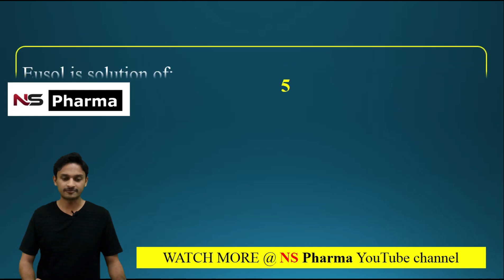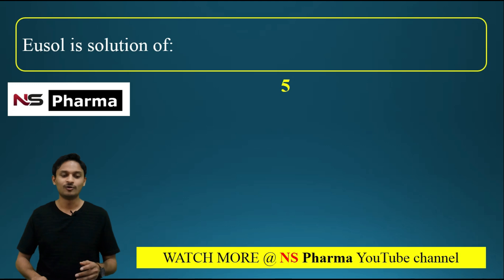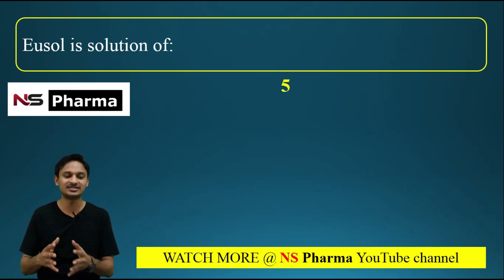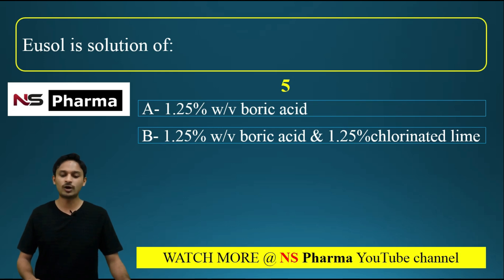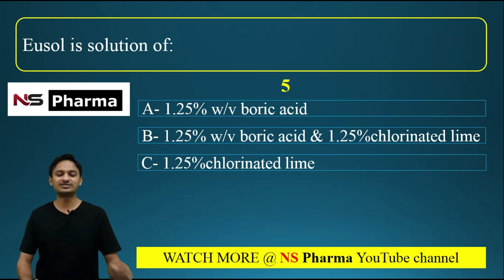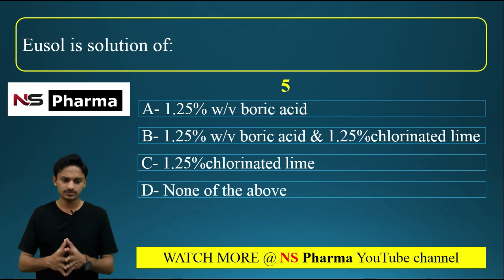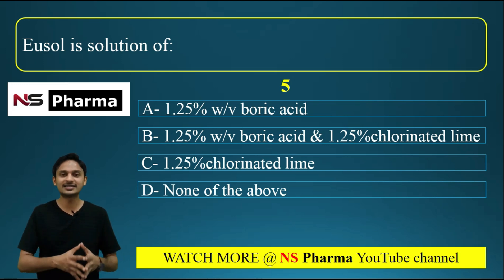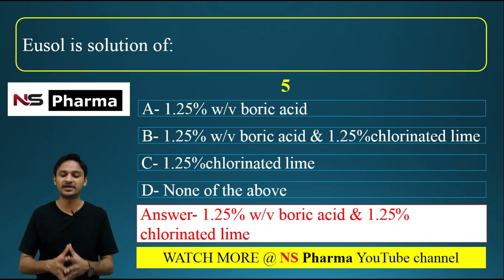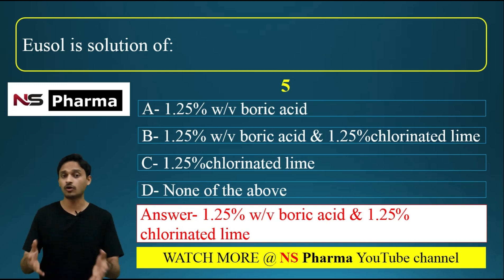Question number 5: Eusol is a solution of — options are: A) 1.25% w/v boric acid, B) 1.25% w/v boric acid and 1.25% w/v chlorinated lime, C) 1.25% of chlorinated lime, D) none of the above. Eusol stands for Edinburgh University Solution. The correct answer is option B: a mixture of 1.25% w/v boric acid and 1.25% w/v bleaching powder (chlorinated lime).